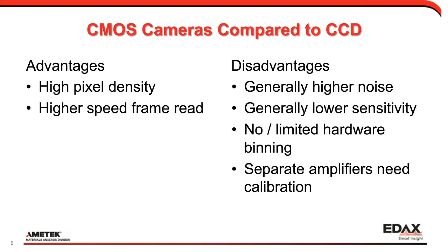CMOS cameras compared to CCDs generally offer higher pixel density and, most importantly, significantly higher frame rates — that is their biggest advantage. The disadvantages include generally higher electronic noise and lower pixel sensitivity compared to the more mature CCD technology. CCDs have a lot more history and are a more mature technology, so their performance is a little bit better in sensitivity. CMOS sensitivity is expected to improve significantly over the next few years.